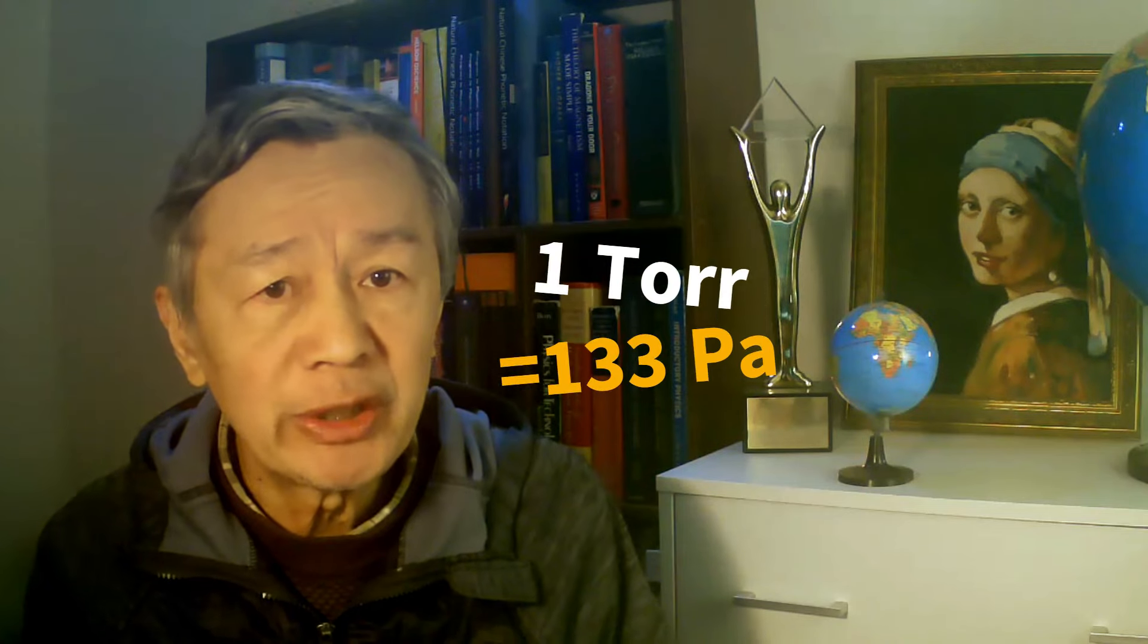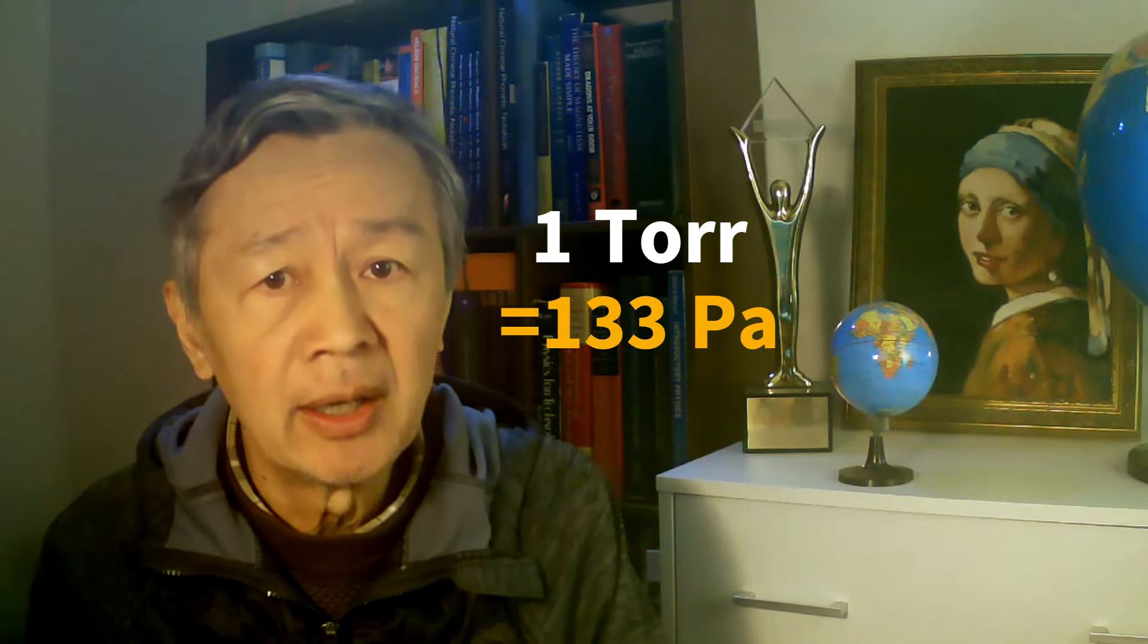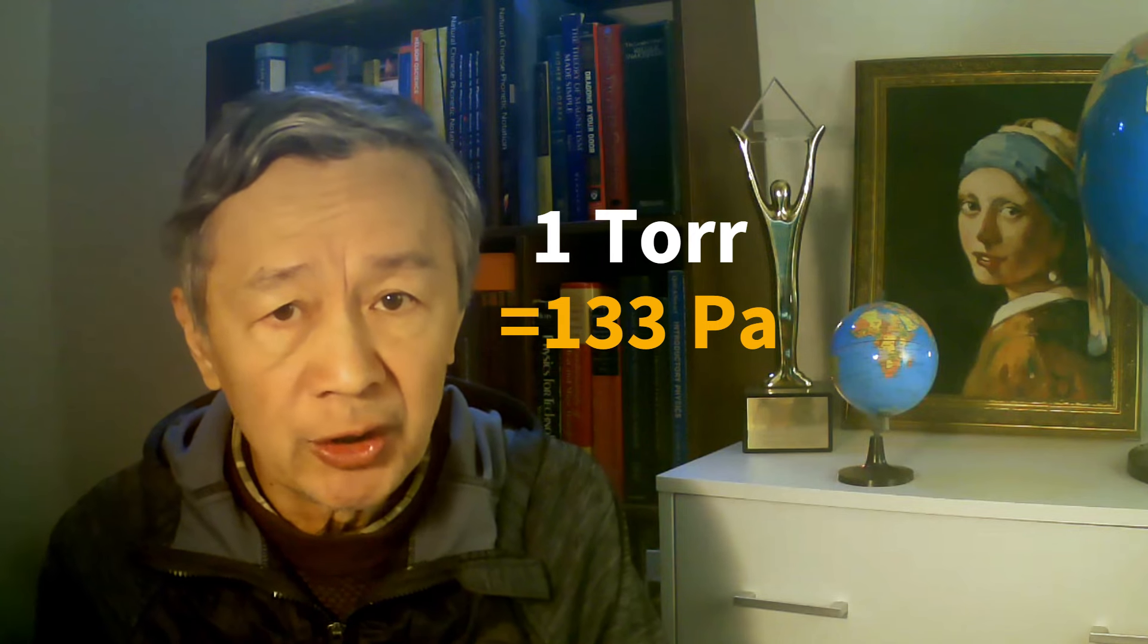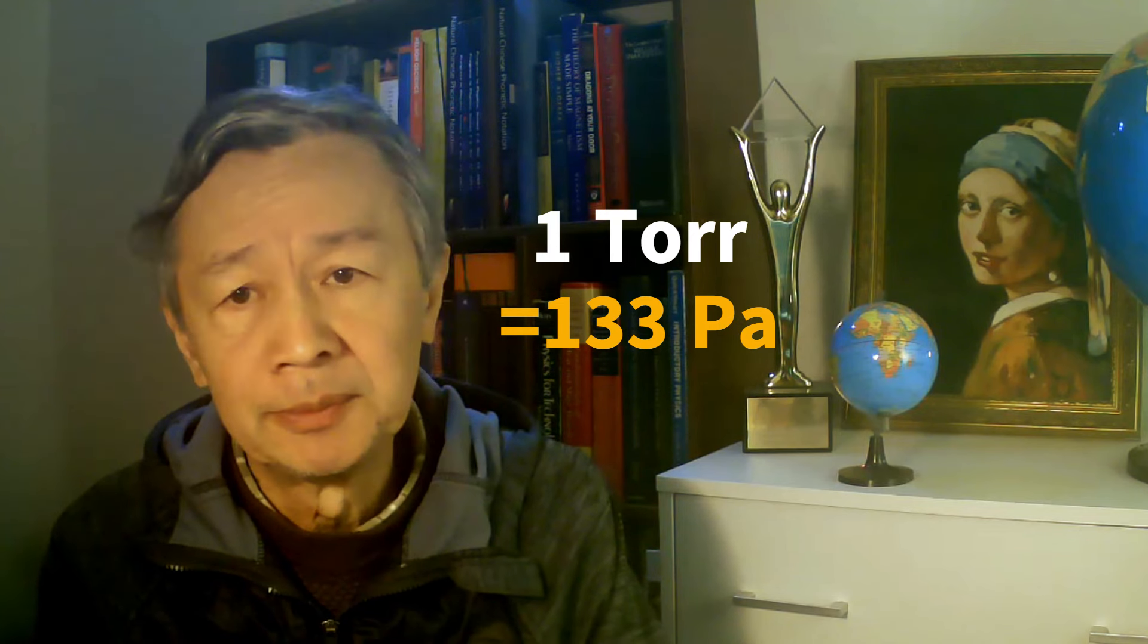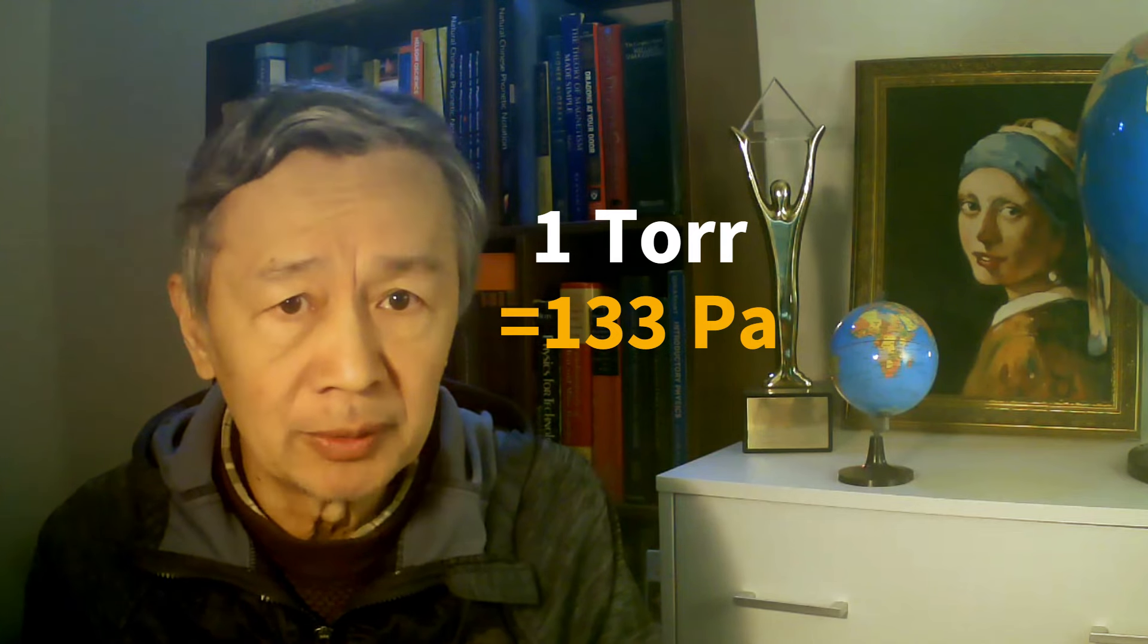Next, Tor or Torr is a unit of pressure which is equal to 1 mm height of mercury. For this simple reason, one Torr equals 1 divided by 760 atm, or 101,325 divided by 760, about 133 pascal. Hence, one Torr is close to 133 pascal.